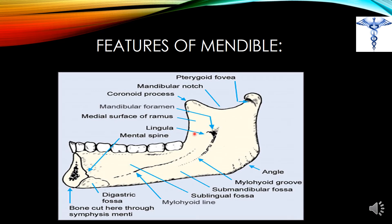Here is the mandibular foramen. In front of the mandibular foramen is the lingula, which is for the attachment of the sphenomandibular ligament. This mandibular foramen is on the medial surface of the ramus of the mandible.